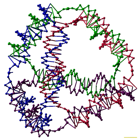The double crossover motif contains two parallel double helical domains with individual strands crossing between the domains at two crossover points. Each crossover point is, topologically, a four-arm junction, but is constrained to one orientation, in contrast to the flexible single four-arm junction, providing a rigidity that makes the DX motif suitable as a structural building block for larger DNA complexes.